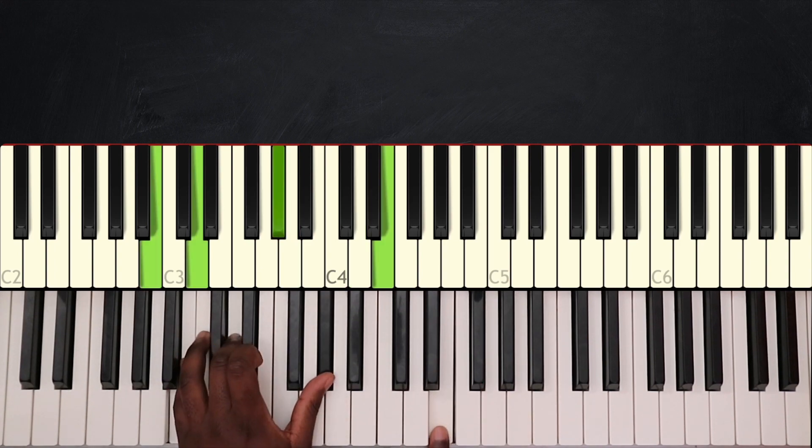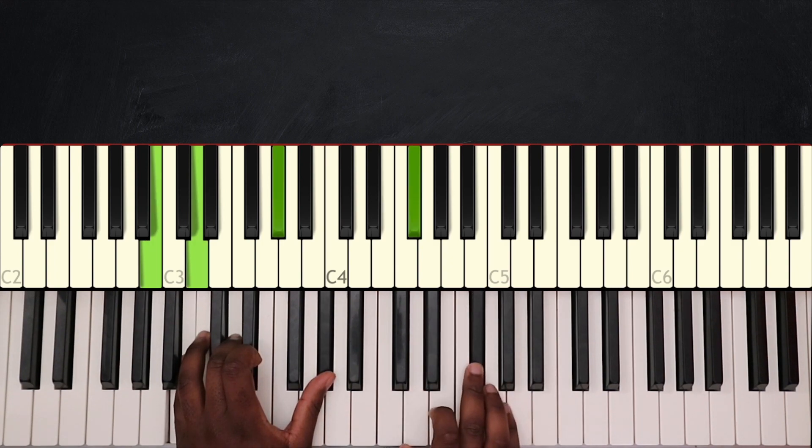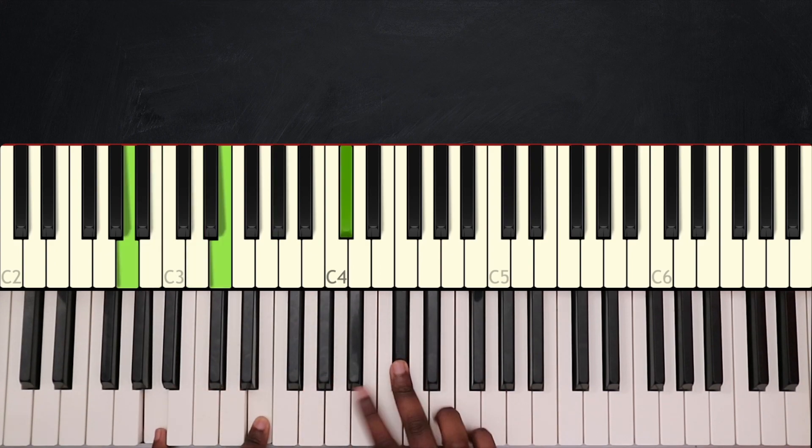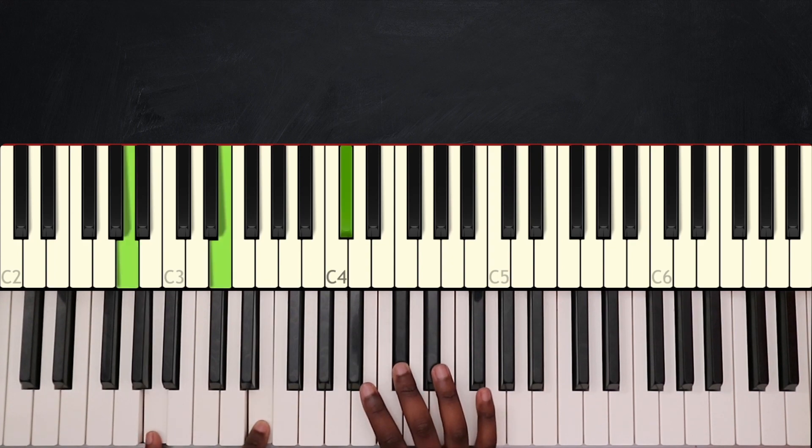Then after that I have E7. I'll play E with my second finger, then F sharp, A. So I'll play A with my fifth finger. Then I'll go back and play E and land on A major with my third finger playing C sharp. Alright, so like this.